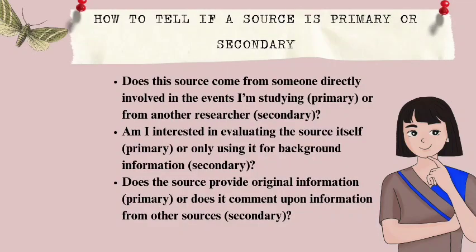How can you tell if a source is primary or secondary? To determine if something can be used as a primary or secondary source in your research, ask yourself these questions: First, does this source come from someone directly involved in the events I'm studying, or from another researcher? Second, am I interested in evaluating the source itself, or only using it for background information? Third, does the source provide original information, or does it comment upon information from other sources?